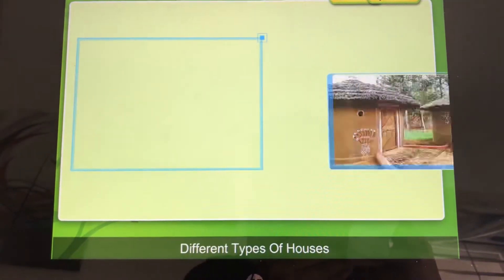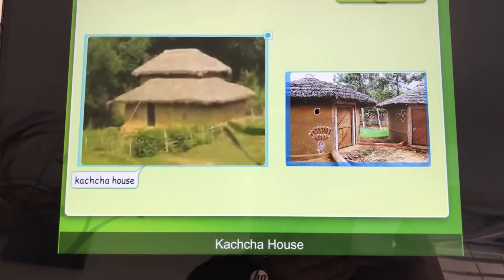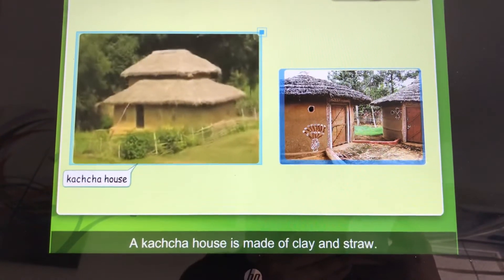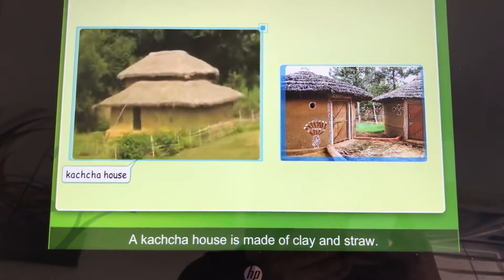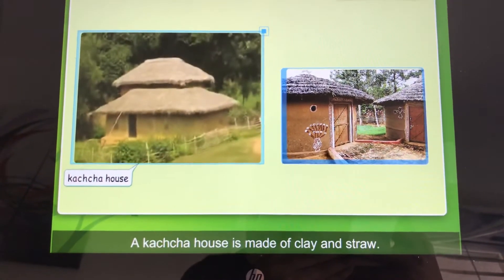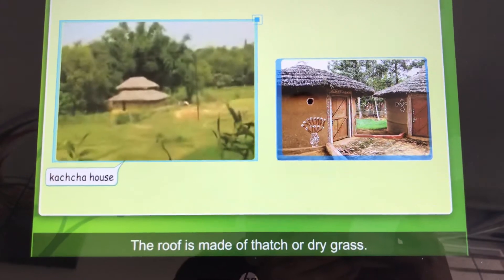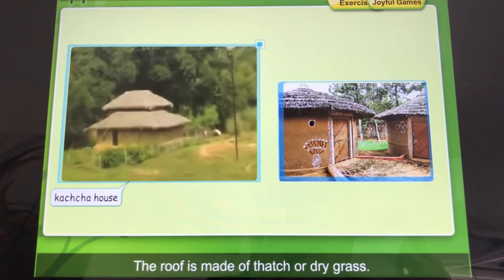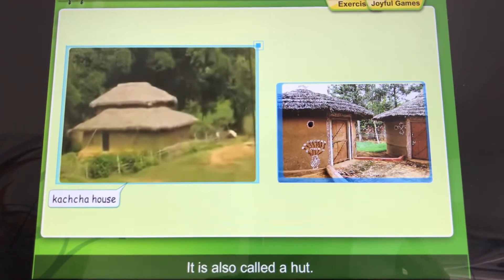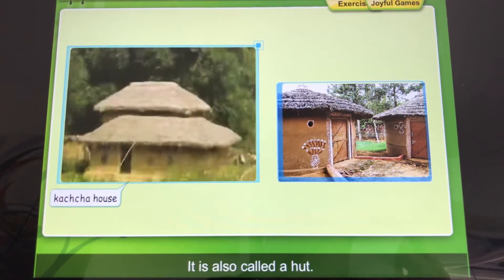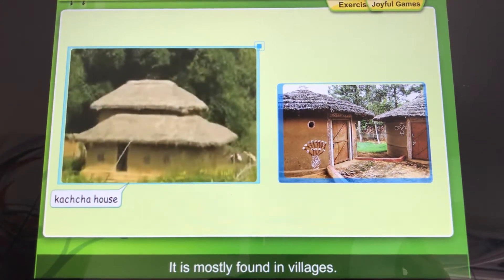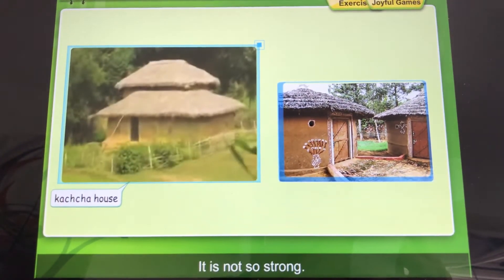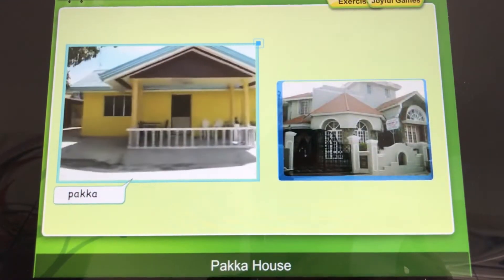Different types of houses. A kacha house is made of clay and straw. The roof is made of thatch or dry grass. It is also called a hut. It is mostly found in villages. It is not so strong.